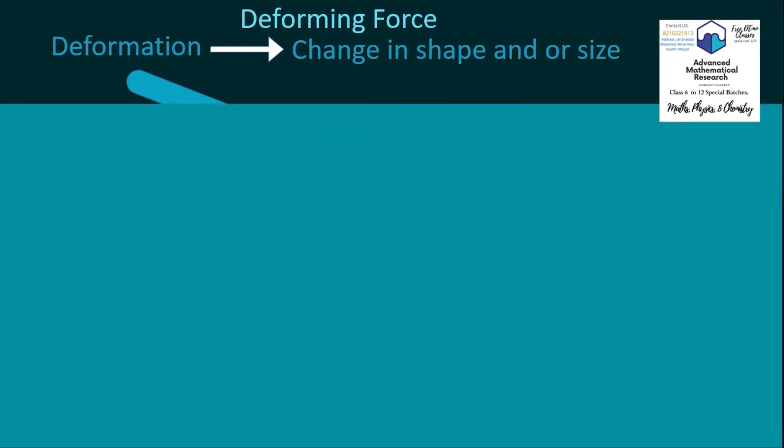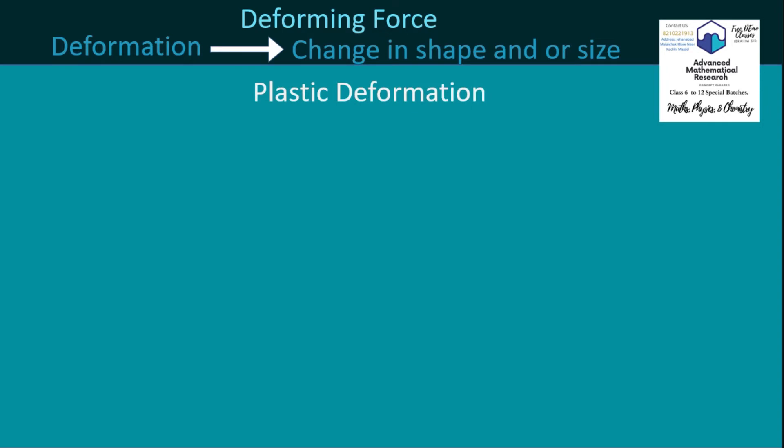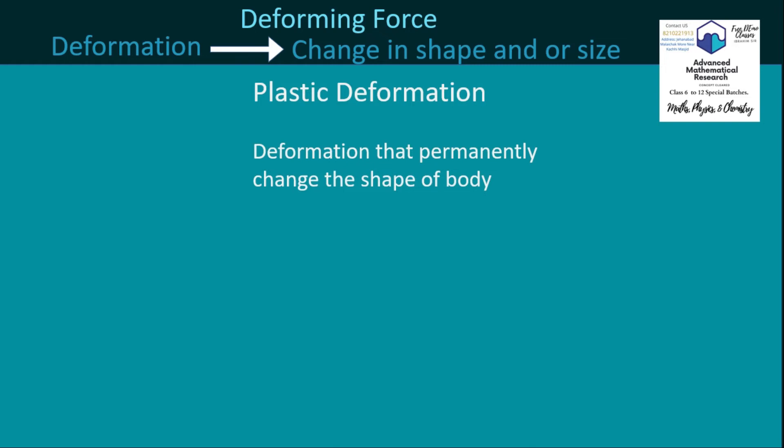Now let's consider plastic deformation. What is plastic deformation? It is the deformation that permanently changes the shape of a body. In plastic deformation, if we apply a deforming force, it will permanently deform the body, meaning there will be no restoring force to bring the body back to its initial position when the deforming force is removed.